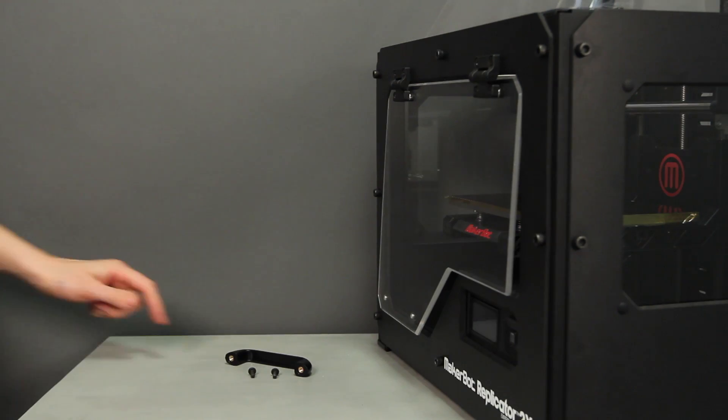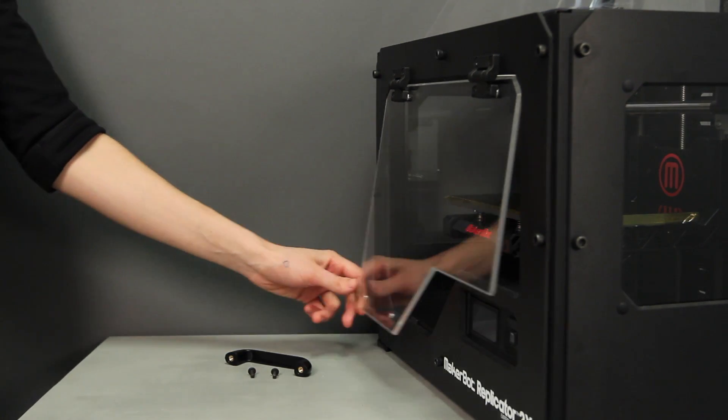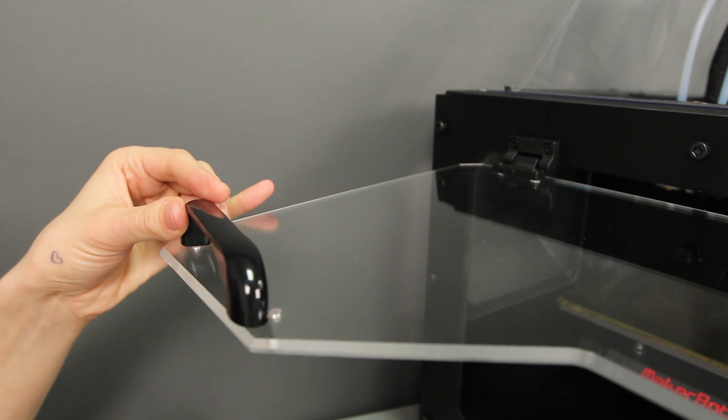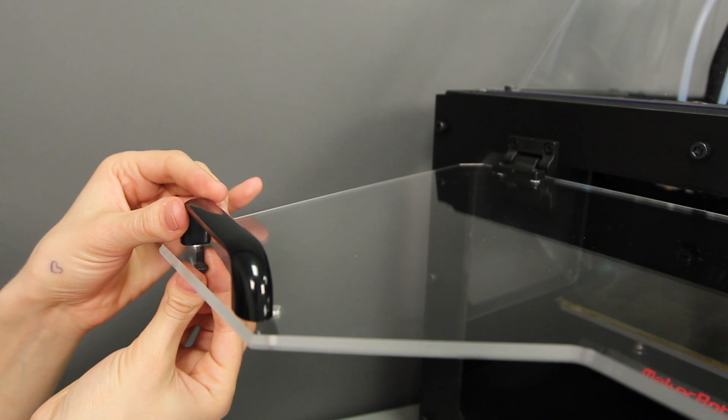The next step is to install the door handle on the front of your MakerBot Replicator 2X. Locate the handle kit in the accessory box and open the enclosure door. Raise it up to a 90 degree angle and place the handle here.